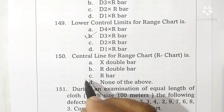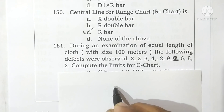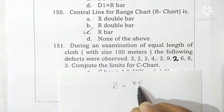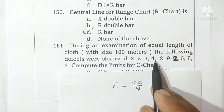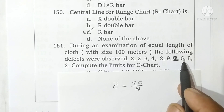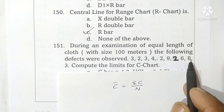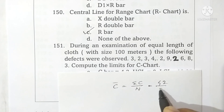Question 150: the center line for the range chart is R-bar. Option C is correct. Question 151: during an examination of equal lengths of cloth, the following defects were observed: 3, 2, 3, 4, 2, 9, 2, 6, 8, and 3. Compute the limits for the C chart. C-bar equals summation C upon n. Adding: 3+2+3+4+2+9+2+6+8+3 = 42. Therefore C-bar = 42 divided by 10 = 4.2.